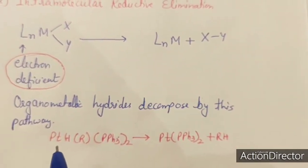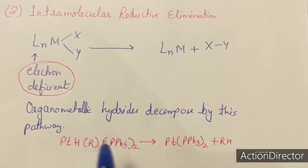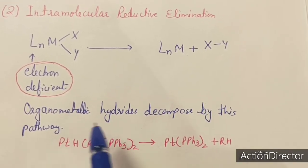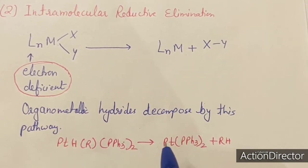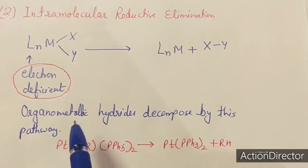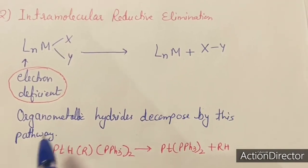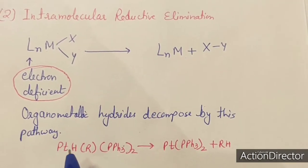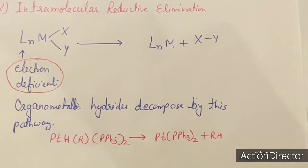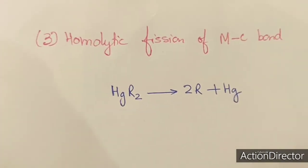For example, in the case of a Pt or Rh complex, a reductive elimination takes place. This generally occurs during the catalytic process and is also a decomposition pathway of organometallic hydrides, because organometallic hydrides are formed during oxidative addition reactions, and reductive elimination occurs for these organometallic hydrides.